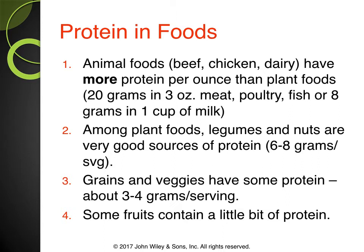Animal versions of protein, which include beef, chicken, and dairy, have more protein per ounce than plant foods — typically about 20 grams per 3 ounces of meat, poultry, or fish, or 8 grams in 1 cup of milk. For a healthy diet, we want a good combination of carbohydrates, protein, and fat. Animal proteins are a quick, simple way to get protein. If you're vegetarian or vegan, you can still get protein, just from different sources — you'll need to eat a higher quantity more often, but it's definitely doable.